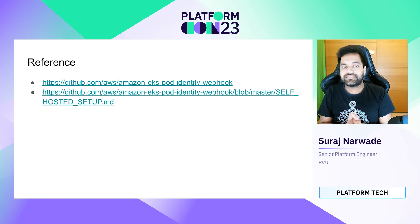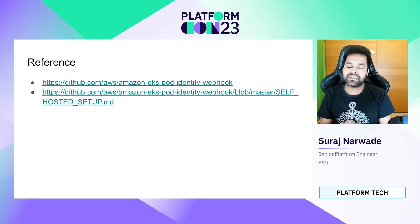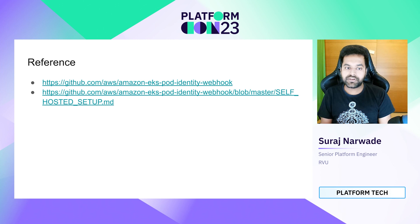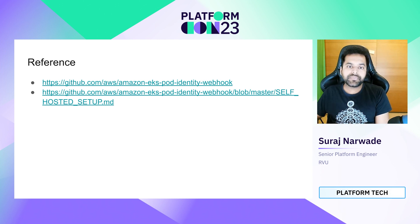I have added a few references for this talk. The first link is for the open source repository for the EKS pod identity webhook project, where you can check the YAML manifest to deploy the webhook and, if interested, the source code as well. The second link is from the same repo but for the self-hosted setup — which we just saw the overview for — and you can follow this guide to set up IRSA for your non-EKS Kubernetes cluster as well. If you have any questions, do let me know. Thank you.